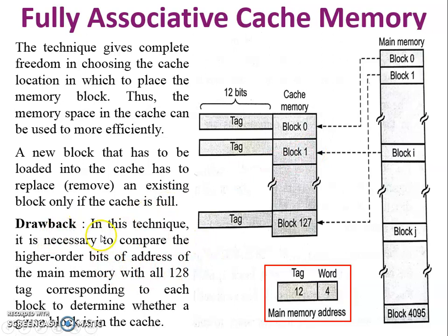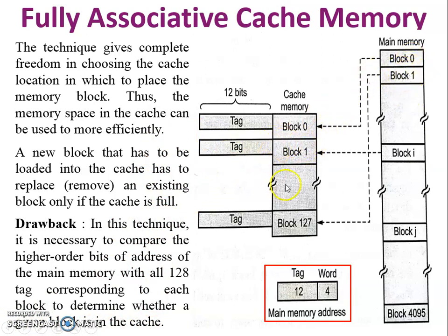The drawback of this system is that it is necessary to compare the higher-order bits of the address of the main memory with all 128 tags corresponding to each block, to determine whether a given block is in the cache. I will now explain this drawback with an example.